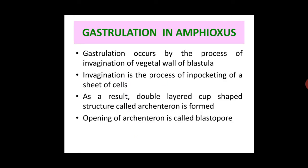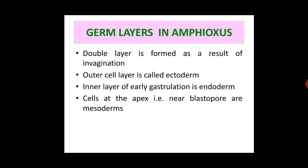Gastrulation occurs by the process of invagination of the vegetal wall of the blastula. Invagination is the in-pocketing of a sheet of cells, resulting in a double-layered archenteron. The blastopore is the opening of the archenteron. The outer cells of the archenteron form the ectoderm, the inner cells form the endoderm, and cells at the apex near the blastopore are called mesoderm.